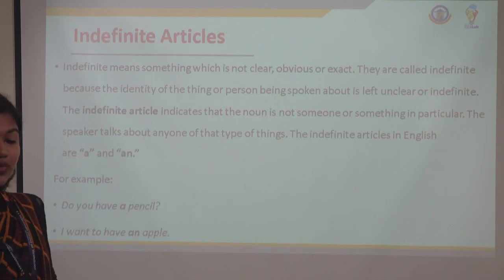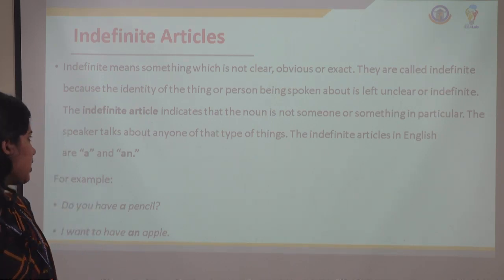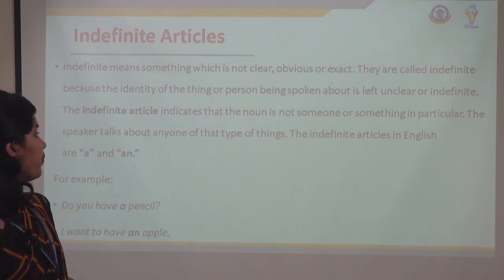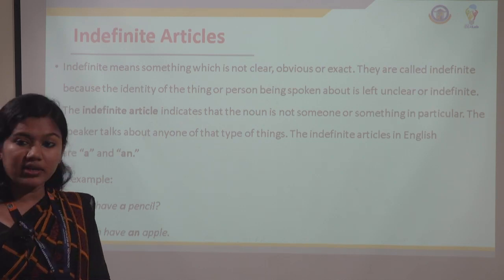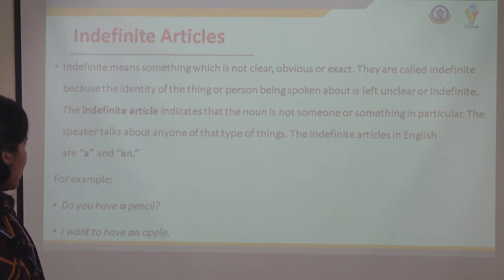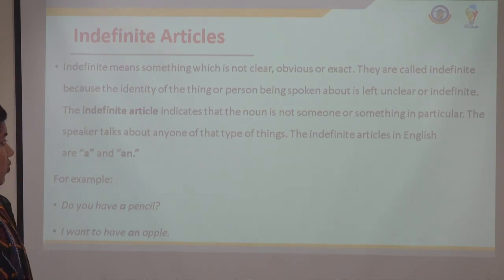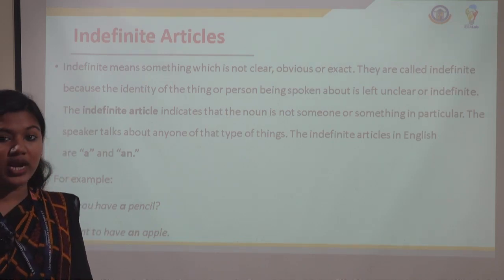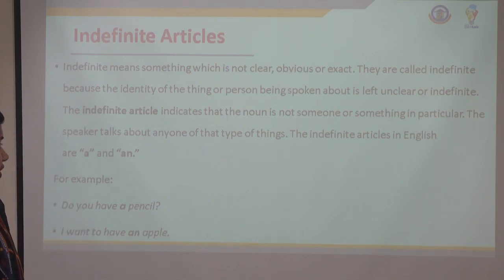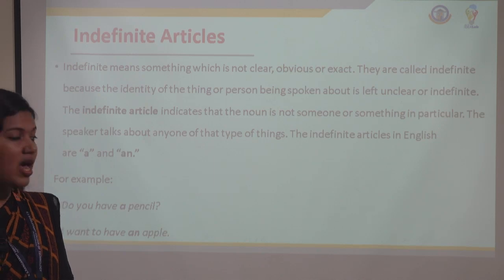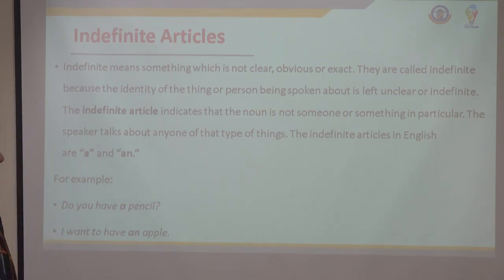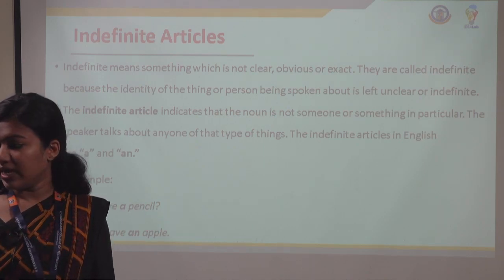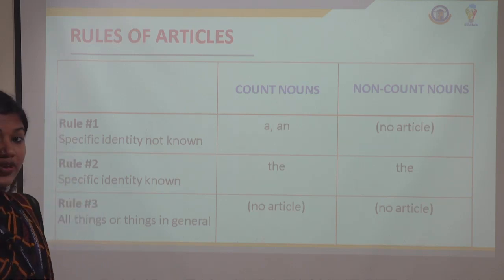Now let's look at indefinite articles. Indefinite means something which is not clear — it is the opposite of the definite article. They are called indefinite because the identity of a thing or person being spoken about is left unclear. The indefinite article indicates the noun is not someone or something in particular. The indefinite articles in English are 'a' and 'an'. For example: 'Do you have a pencil?' or 'I want to have an apple.'